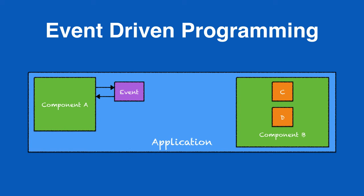Now, we know that component C is a sub-component of component B and is actually part of component B — we can say that component B is its container. So if component C were to fire a component event, then both component C and component B could subscribe to and handle that event. This is because component C is the originating component and component B is the container component, or the component that instantiated component C. So component events can be handled by either the component that fired them or container components.